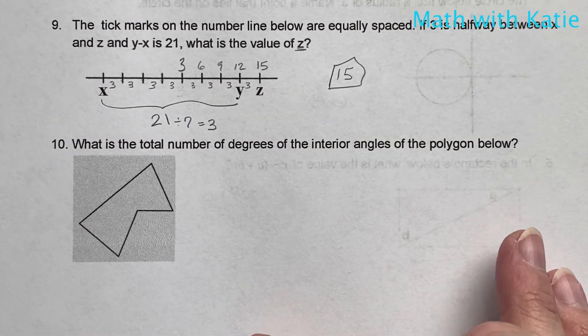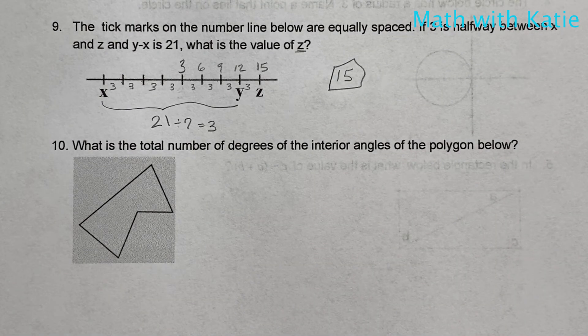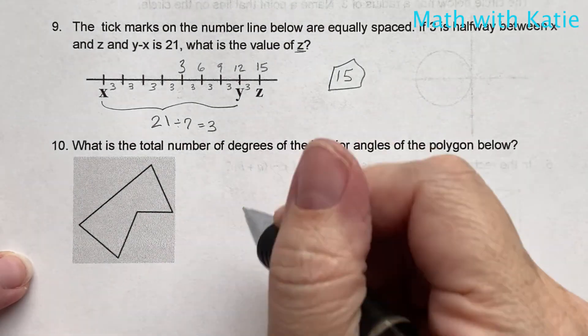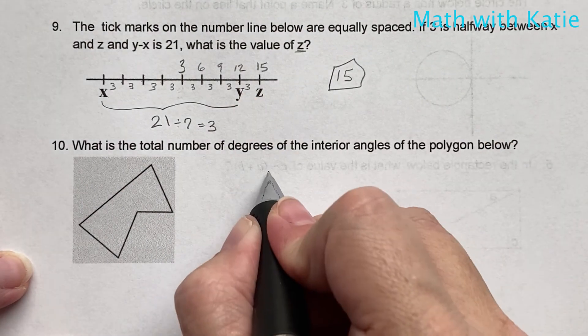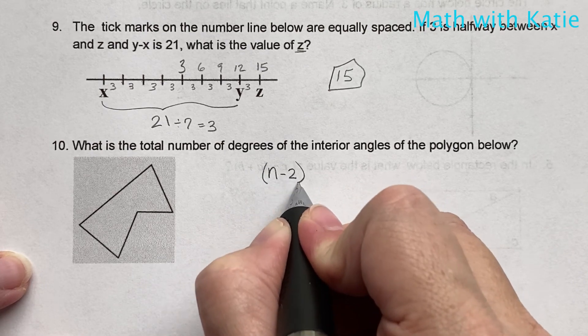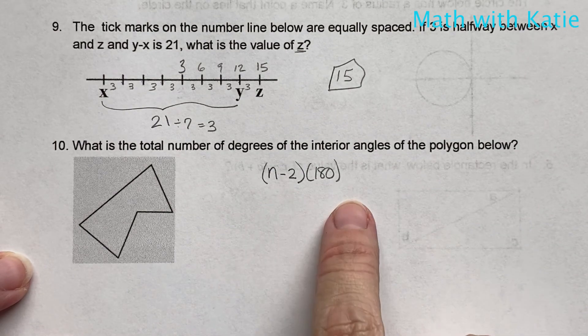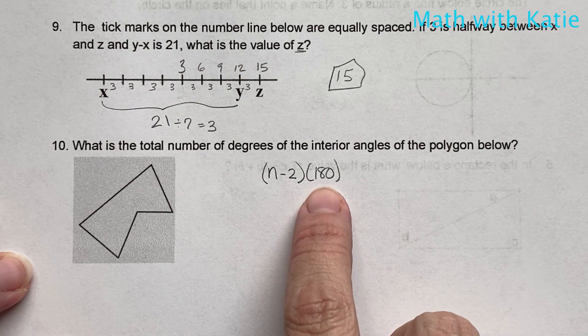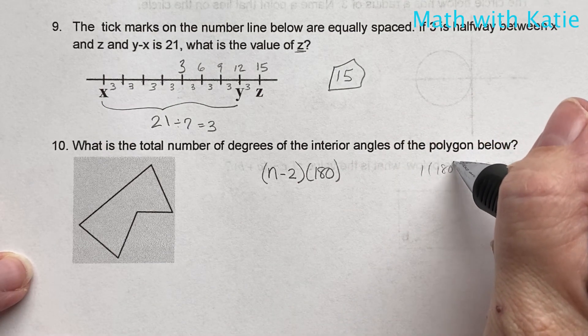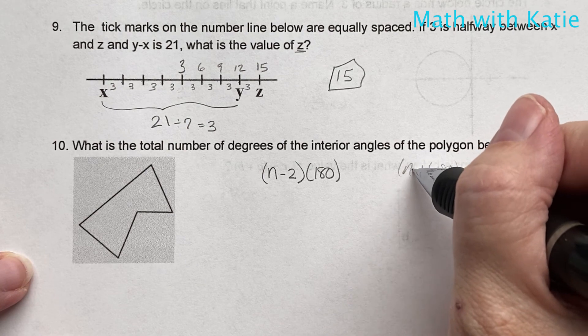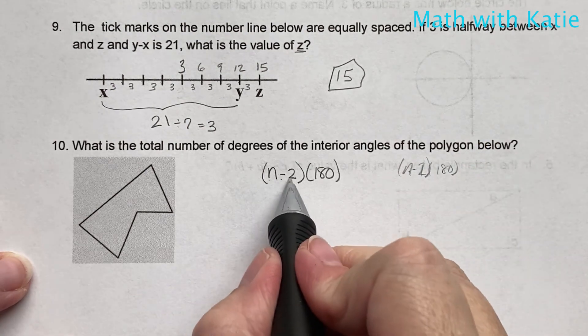What is the total number of degrees of the interior angles of a polygon? Well, in order to do this, we need to remember our formula, which is number of sides minus two times 180. And if you get stuck, just remember a triangle is 180. So you know it's going to have to be one times 180. And hopefully you can work back from there to remember it's n minus two because n would be three. So n minus two times 180.